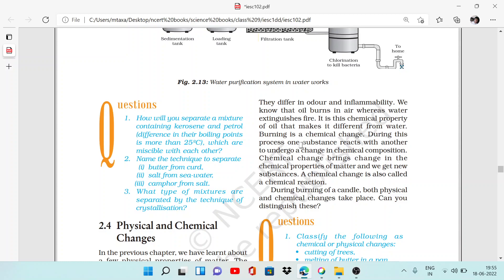During this process, one substance reacts with another to undergo a change in chemical composition. Chemical change brings change in the chemical properties of the matter and its constitution. The reactant converts into new products. Chemical change is also called a chemical reaction.